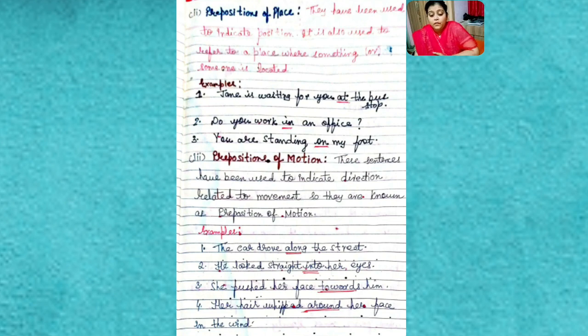The car drove along the street. By the way, what is 'drove'? Drove is the past tense of drive. The car drove along the street. So what kind of preposition is this? Where is the preposition? The preposition is 'along.' Very good. Now what type of preposition is this? This is preposition of motion or movement. He looked straight into her eyes. She pushed her face towards him.